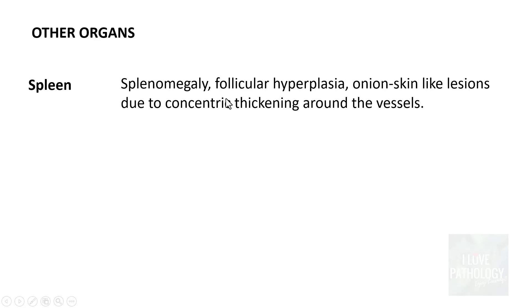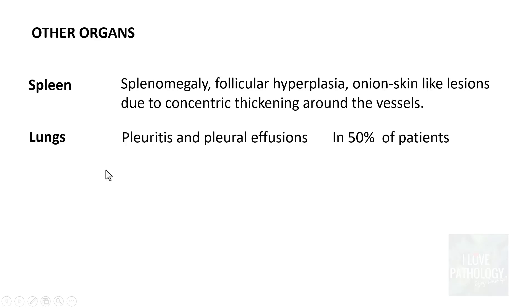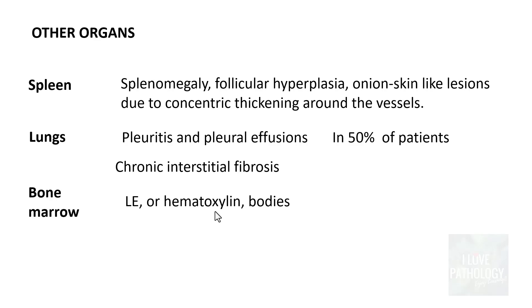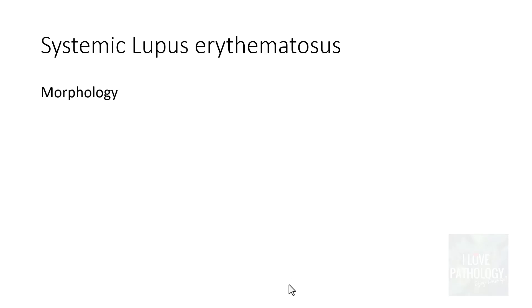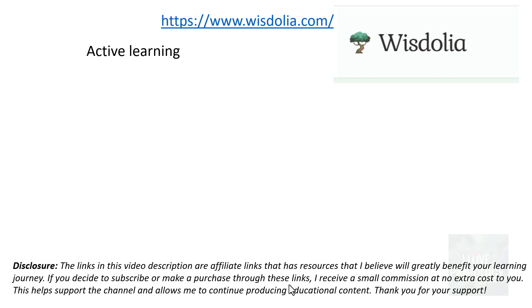Morphological features in other organs: in the spleen, there can be splenomegaly due to follicular hyperplasia, with onion-skin lesions from concentric thickening around splenic blood vessels. Pleuritis and pleural effusion are seen in 50% of patients with lung involvement; chronic interstitial fibrosis can occur in long-standing disease. LE bodies or hematoxylin bodies can be found in the bone marrow. Lymph nodes show hypoplastic germinal centers and very rarely necrotizing lymphadenitis.